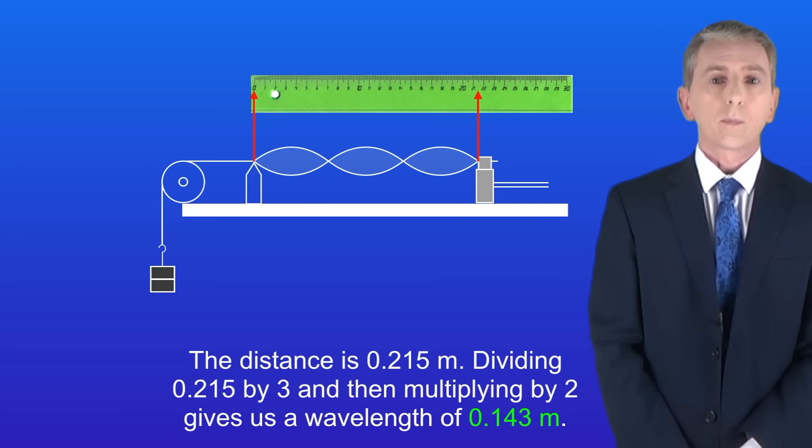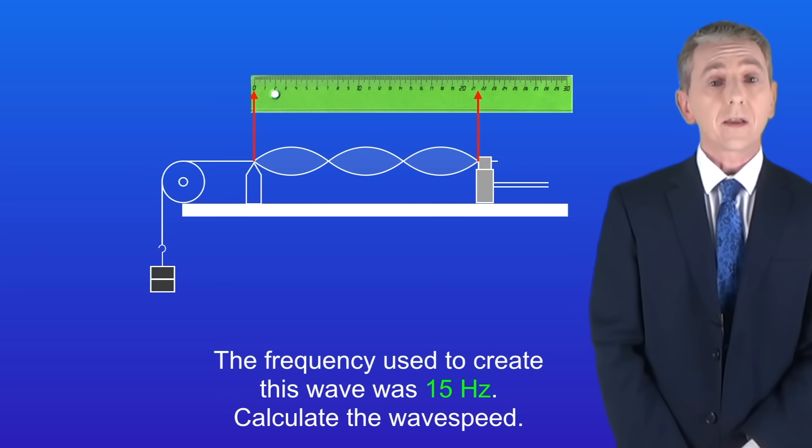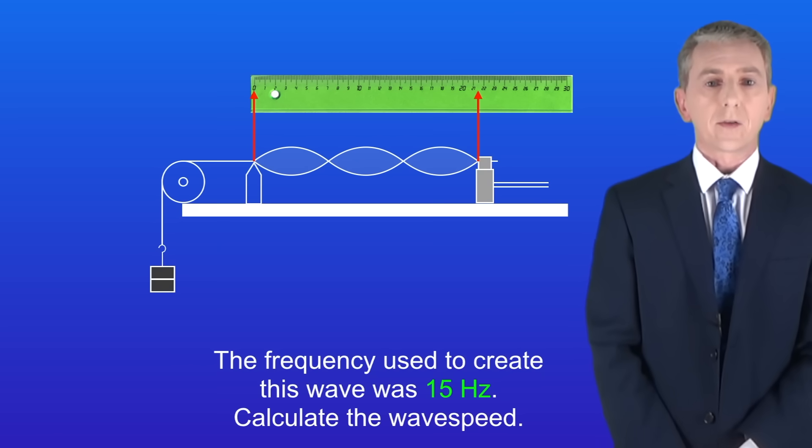So the distance is 0.215 meters. Dividing 0.215 by 3 and then multiplying by 2 gives us a wavelength of 0.143 meters. The frequency used to create this wave was 15 hertz so I'd like you to calculate the wave speed. Pause the video now and try this yourself.